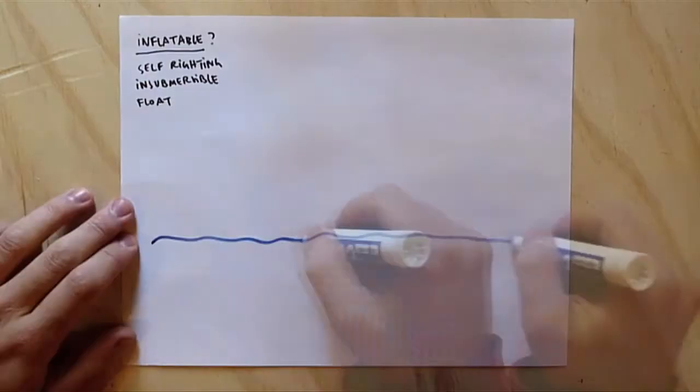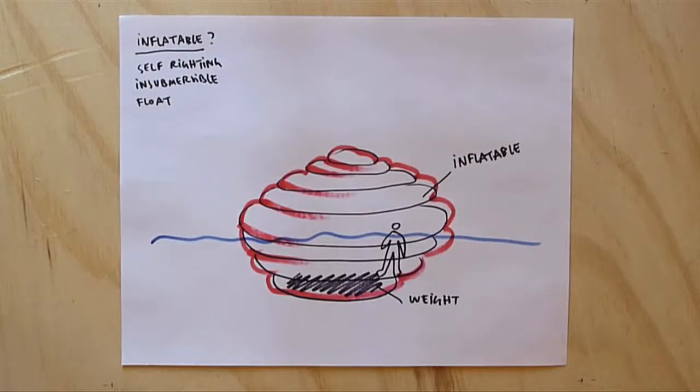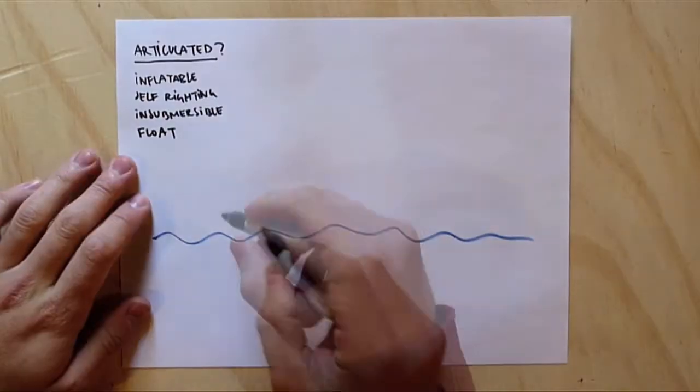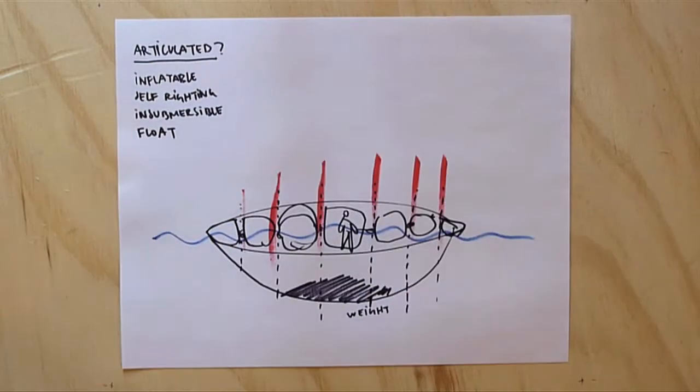Inflatable, well, it's inflatables. Articulated, so it means the joints. And joints are weak points, so we have to be careful on that one.